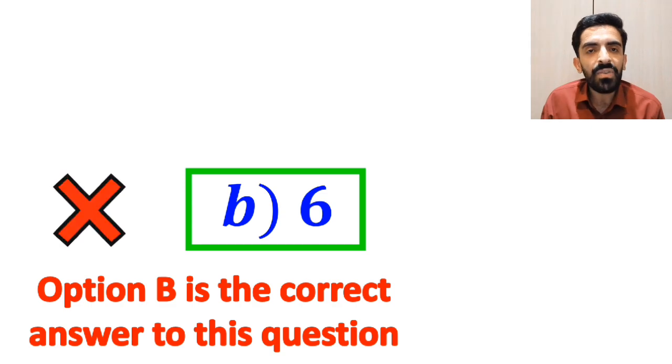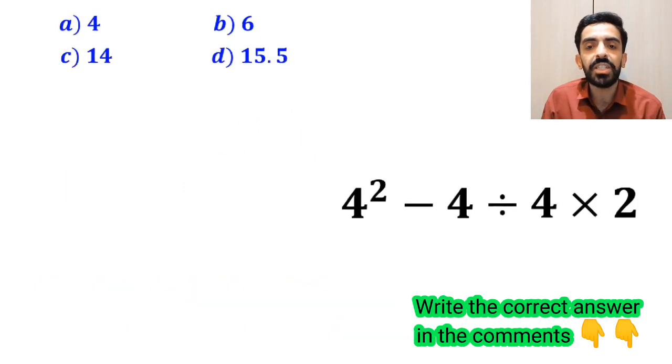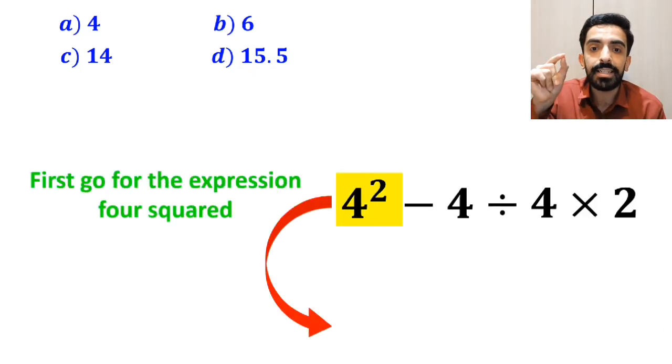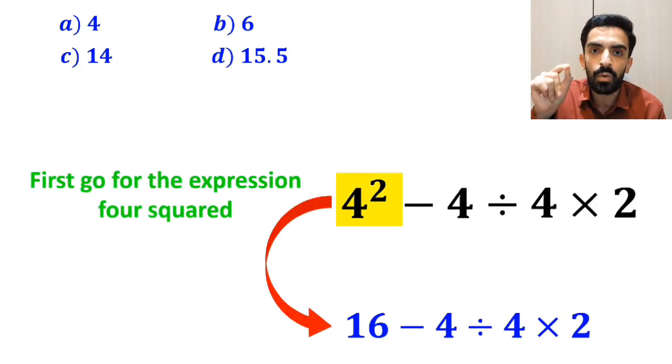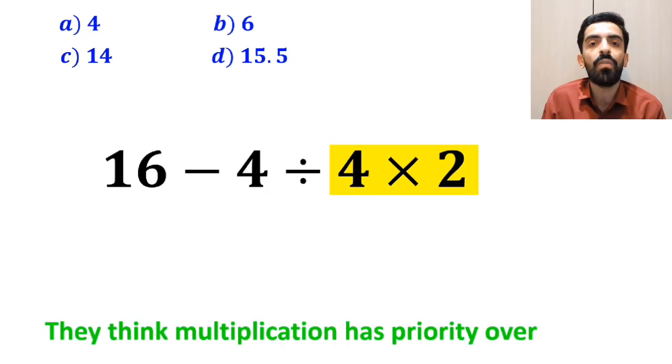Also, some other people to solve this problem, first go for the expression 4 squared, and they simplify it to 16 minus 4 divided by 4 times 2. In the next step, they usually go for the multiplication between 4 and 2, because they think multiplication has priority over division.